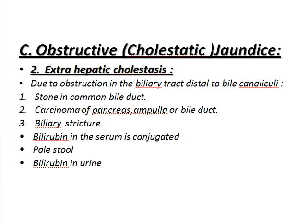Obstructive or cholestatic jaundice due to extra-hepatic causes — obstruction in the biliary tract distal to bile canaliculi. Number one: stone in the common bile duct. Number two: carcinoma of the pancreas, ampulla, or bile duct. Number three: biliary stricture. Bilirubin in the serum is conjugated. Pale stools. Bilirubin present in urine.